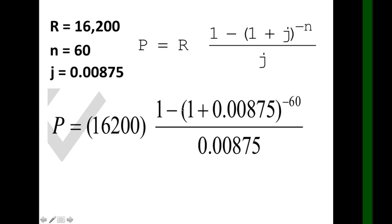1 minus, open parenthesis, 1 plus 0.00875, close parenthesis, raised to negative 60. Then click equals.